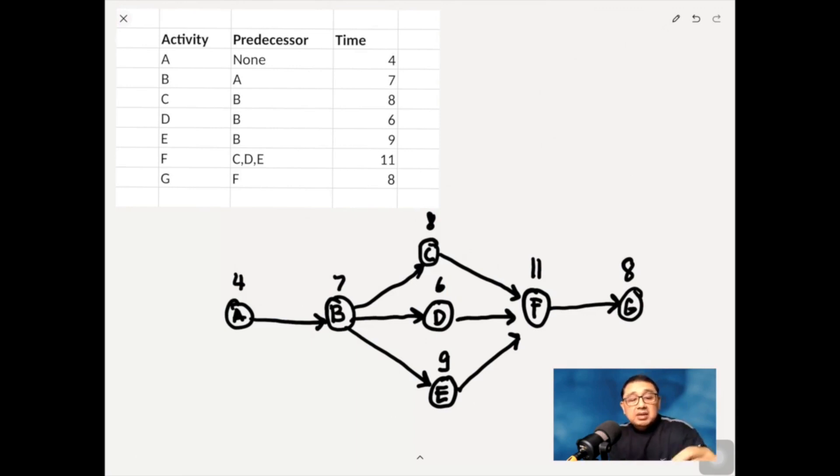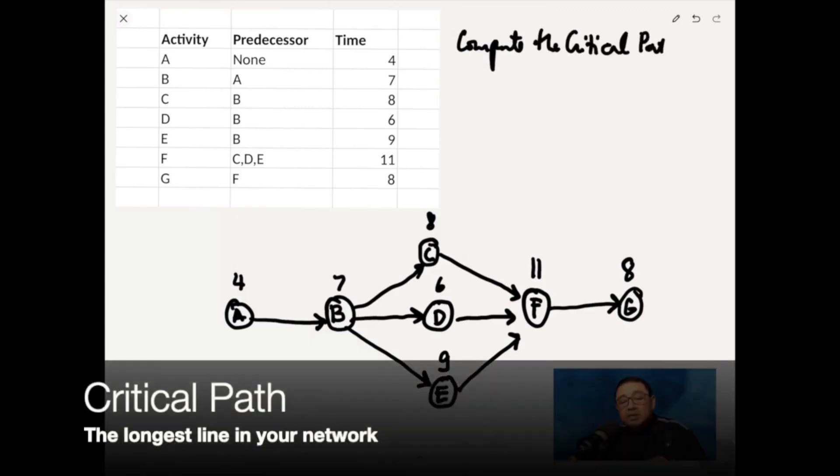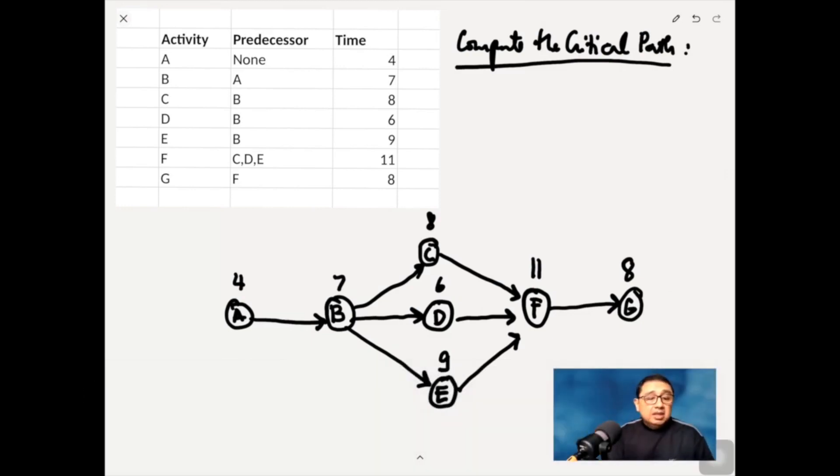Now what we want to do is now compute for the critical path. And how do we do this? So when we compute for the critical path, we actually try to solve all the possible routes from A to G. And so one way to look at it is to move from left to right, then top to bottom.